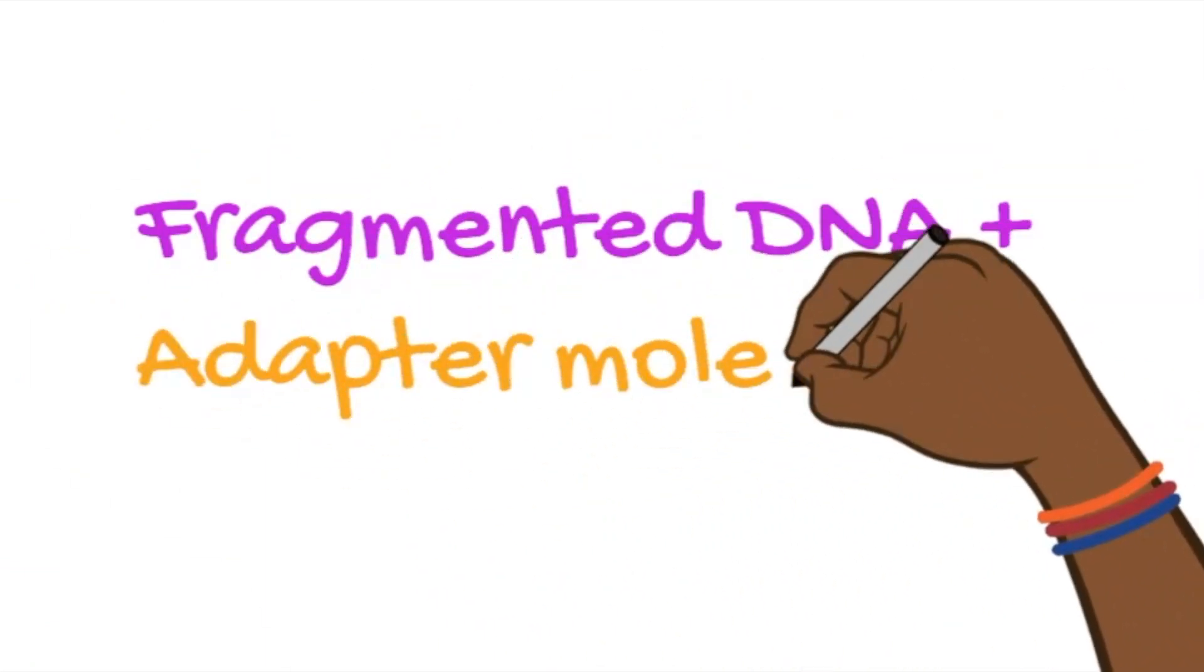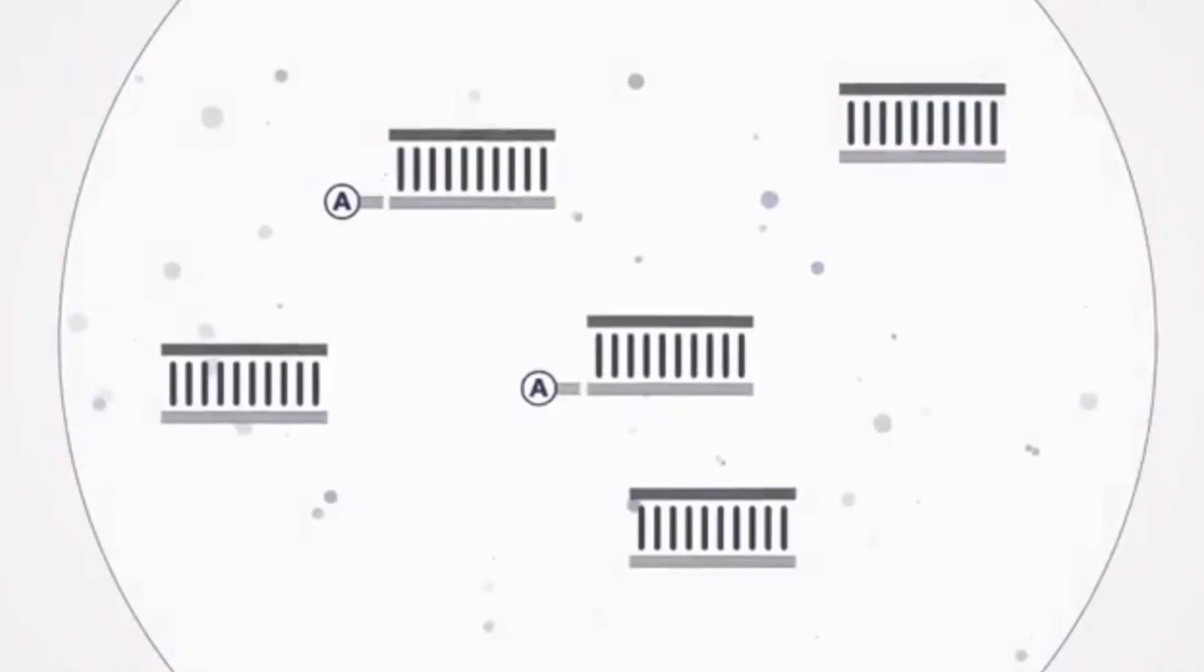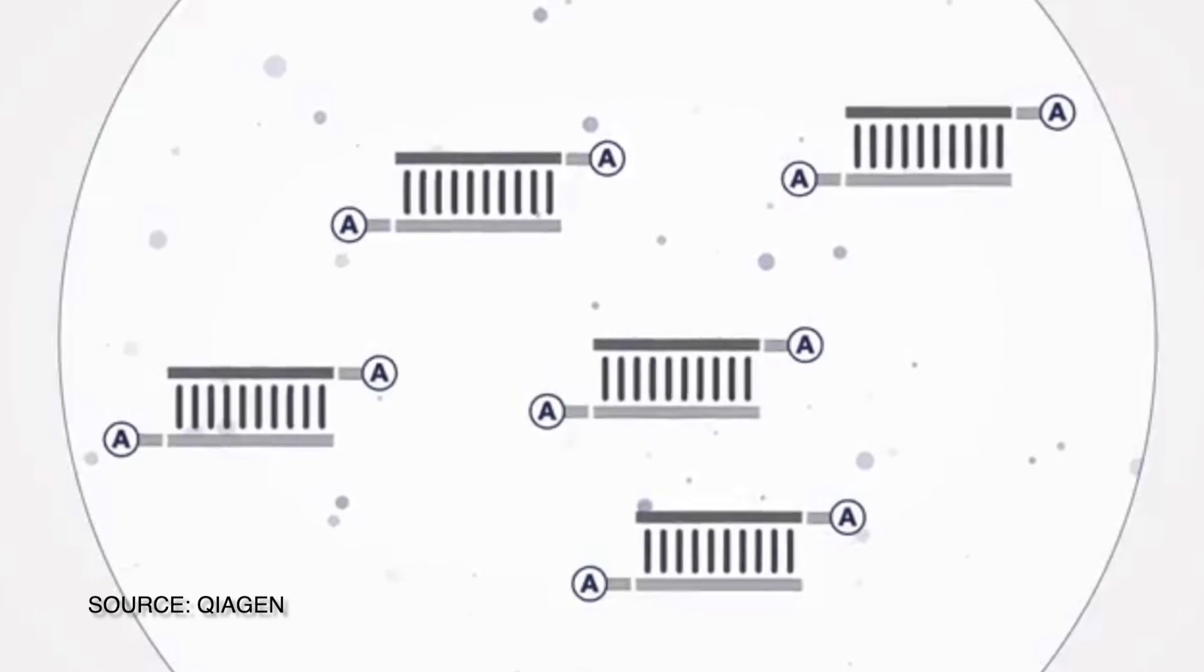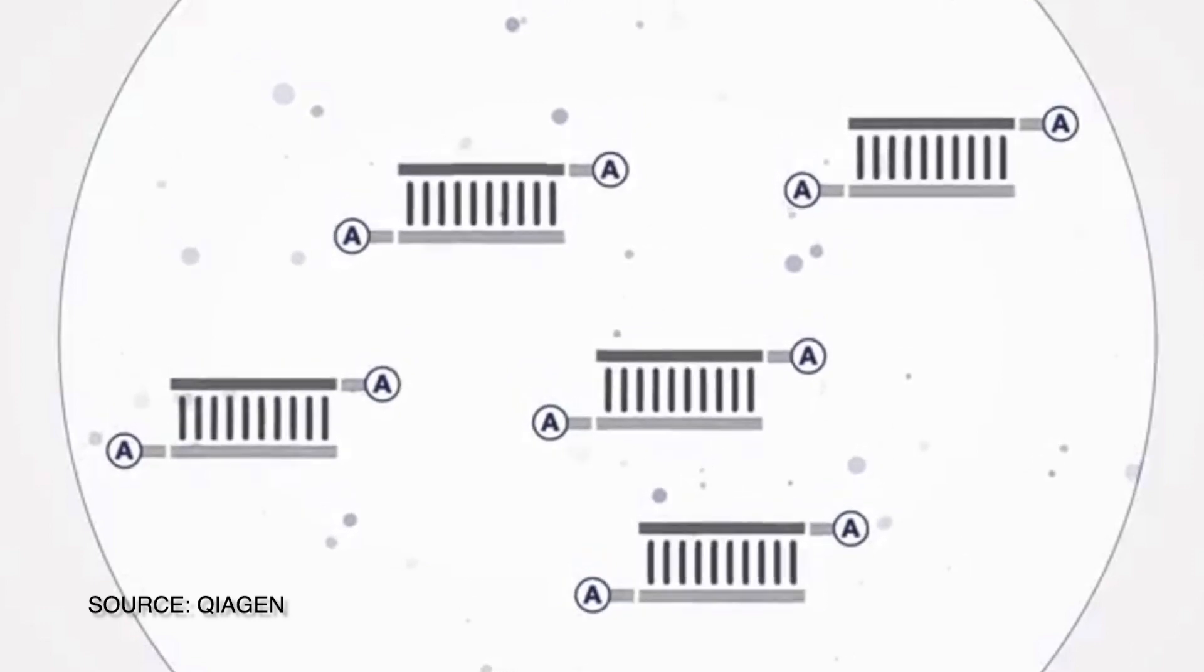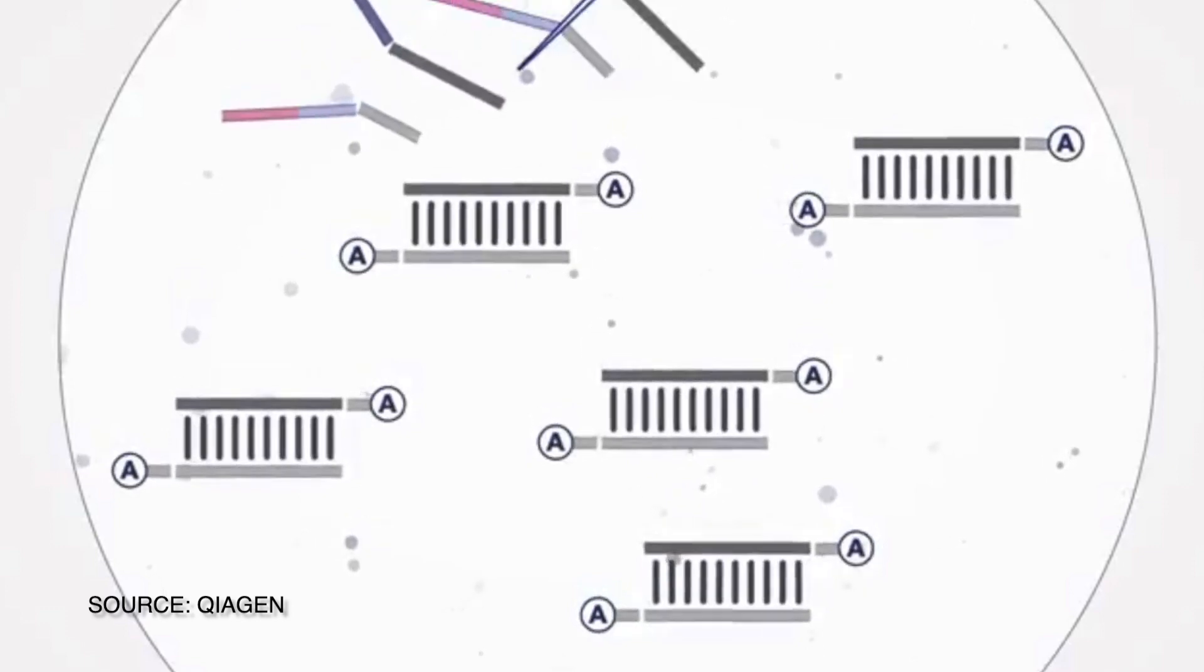After the process of fragmenting, whatever method you use, small pieces of DNA, aka oligonucleotides called adapters, are then going to be ligated to your fragmented DNA.